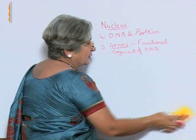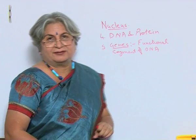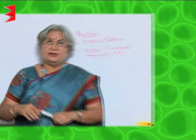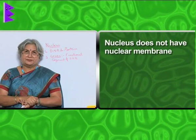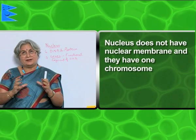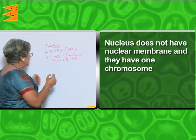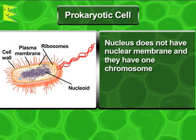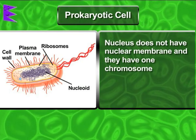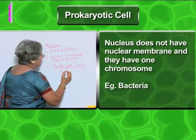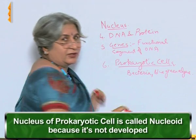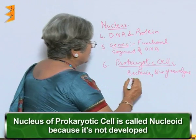This is the structure of the nucleus. Do all organisms have the same type of structure? No. If we study bacteria or blue-green algae, we find that the nucleus does not have a nuclear membrane, and the number of chromosomes is only one. Such cells which have this kind of simple or primitive nucleus are called prokaryotic cells. The word 'karyotic' refers to nucleus. Examples are bacteria and blue-green algae. Because the nucleus is not well developed, it is called a nucleoid.